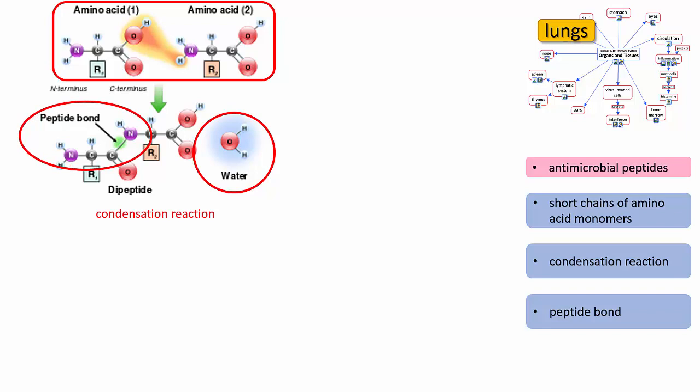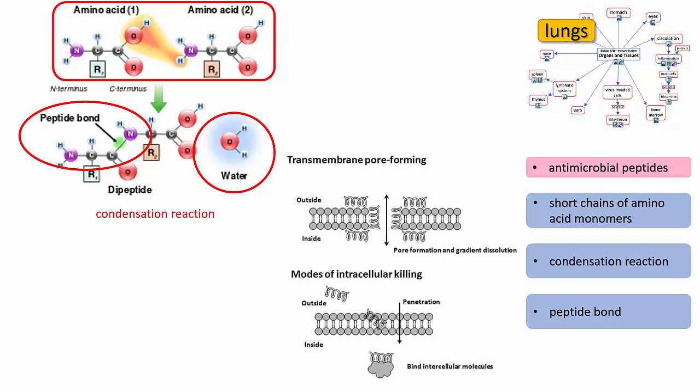There are two main ways that these peptides can kill microbes. The first way is by transmembrane pore forming, and here the peptides form holes in the cell membrane.